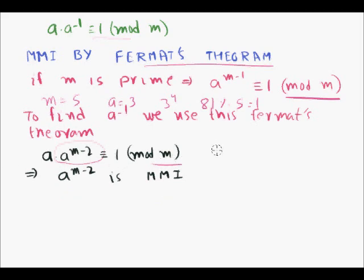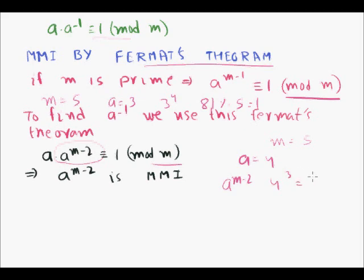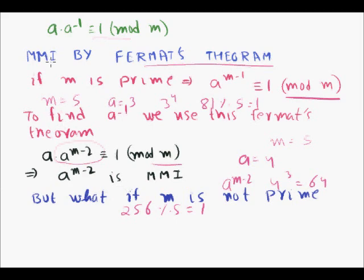For example, with m = 5 and a = 4: the multiplicative inverse is 4^(5−2) = 4^3 = 64. Checking: 64 × 4 = 256, and 256 mod 5 = 1. So 64 is indeed the multiplicative inverse of 4 modulo 5 by Fermat's theorem.